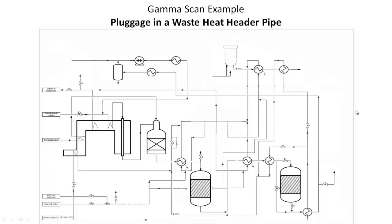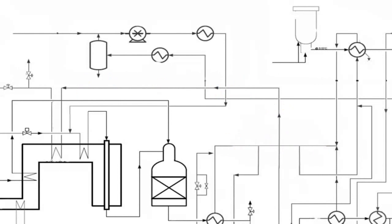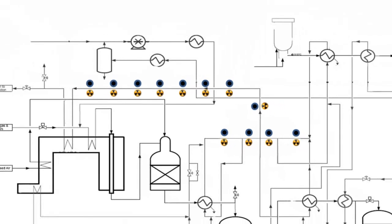Tower Scan was contacted because a restriction in the pipe was suspected. Initially, spot readings were taken at various locations along the length of the header by placing a radioactive source on one side of the pipe and a radiation detector on the opposite side.